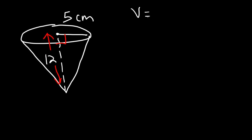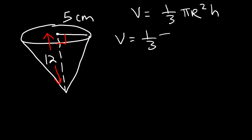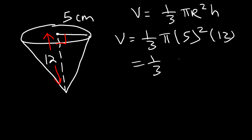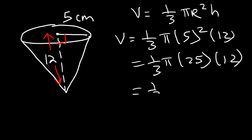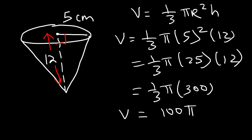Let's start with the volume. V = one-third π r² h, with r = 5 and h = 12. 5 squared is 25, and 25 times 12 is 300. So we have one-third π times 300, and one-third of 300 is 100. The volume is 100π cubic centimeters.